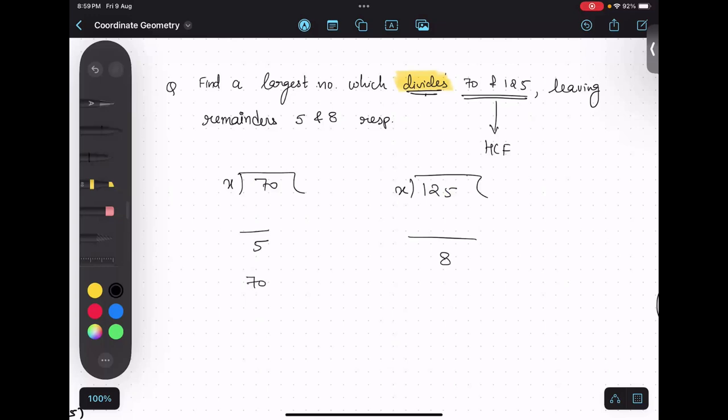But why should I subtract 70 minus 5 equals 65, and 125 minus 8 equals 117? Because 70 has 5 more numbers. See, the question is we have to find a number which will leave a remainder. But we can only find HCF if there is no remainder. HCF will always give you remainder 0. So I need to get rid of this 5 from 70, and similarly get rid of 8 from 125. Understood?